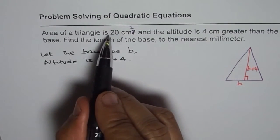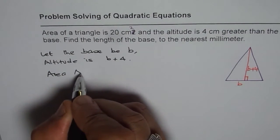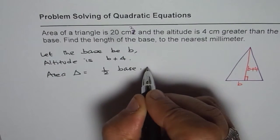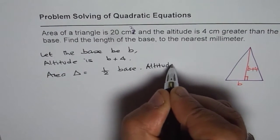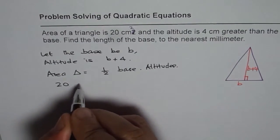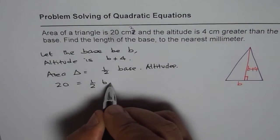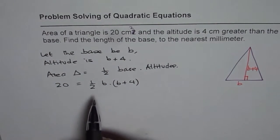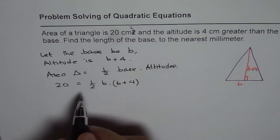Now it says area is 20 centimeters squared. The area of a triangle is half base times altitude. So area is 20, which equals half of base B times altitude B plus 4. That gives us the quadratic equation. We can solve for B.